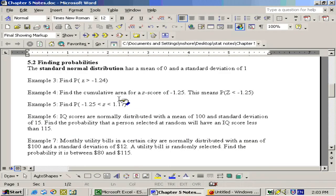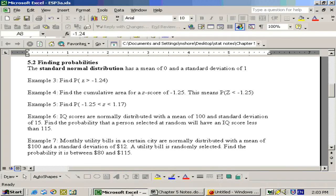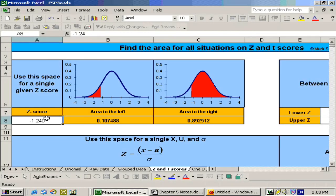The next problem says find the cumulative area for a z-score of negative 1.25. Cumulative area means the probability that somebody scores up to that point, in other words, the probability that z is less than negative 1.25. So all we would do is right here put in negative 1.25, and we would want the area to the left, which is 0.1056.